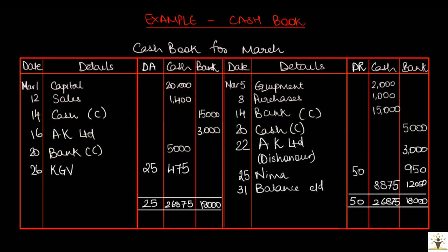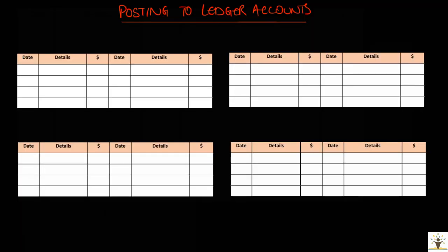Let us try posting these transactions to the ledger accounts. Posting to ledger accounts is done in a similar way as already seen for the other ledger accounts. The only difference will be seen in the posting to discount accounts. Starting with AK Limited: on March 16, the check was received from AK Limited, so in the AK Limited account it will be recorded on the credit side. Since the amount was received by check, details would be bank and $3,000 in the amount column.